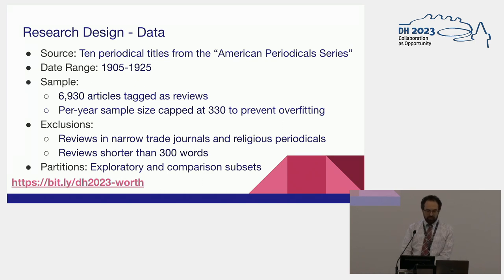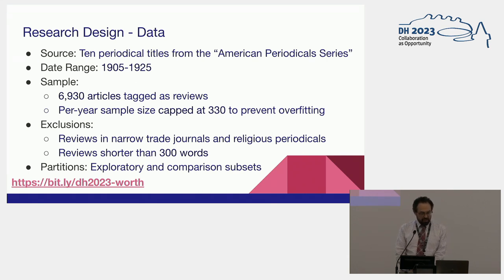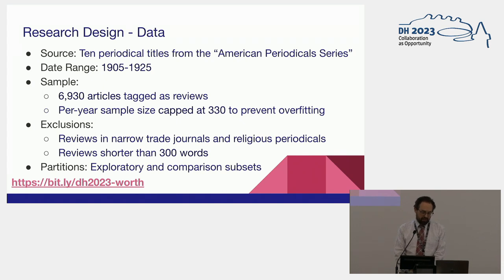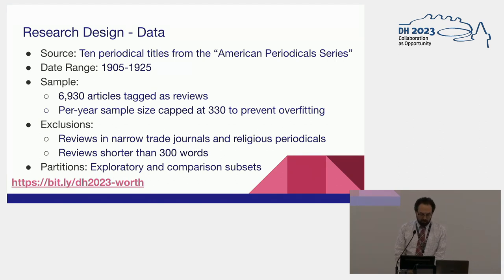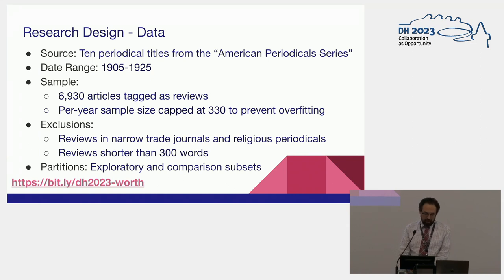My research design started with 10 periodical titles from the American Periodical Series, which is a ProQuest database, 1905 to 1925. I used a sample of 6,930 articles that are tagged as reviews in that dataset, with an additional control of capping the sample size per year at 330 reviews so that no one year dominated the trend. I excluded reviews in narrow trade journals, religious periodicals, and reviews shorter than 300 words.